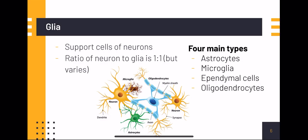Glia, as mentioned before, are the support cells of neurons. The ratio of neuron to glia is one-to-one, but varies in each neural circuit. There are four main types: astrocytes, microglia, ependymal cells, and oligodendrocytes.